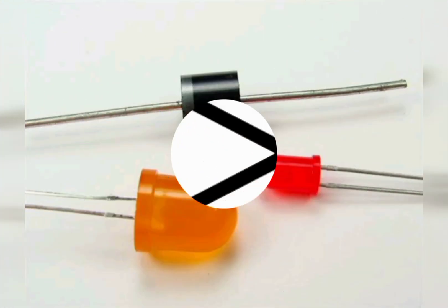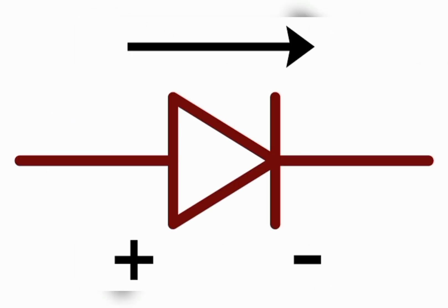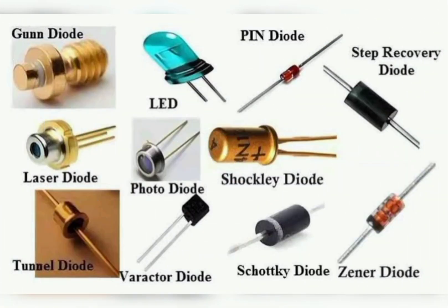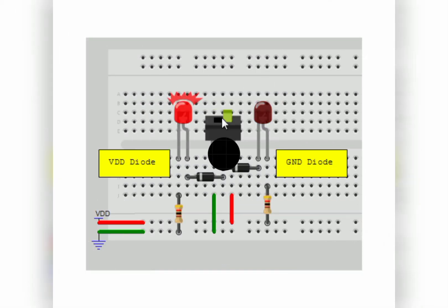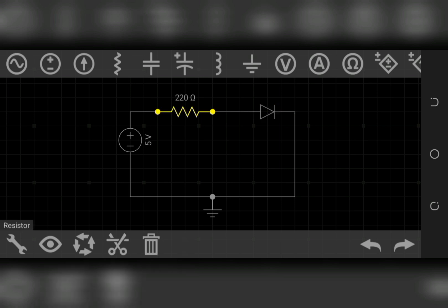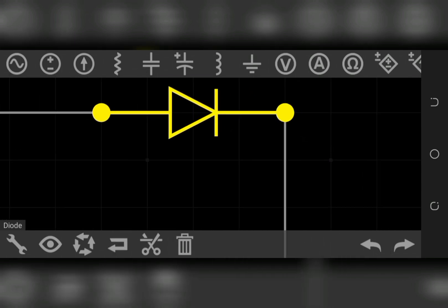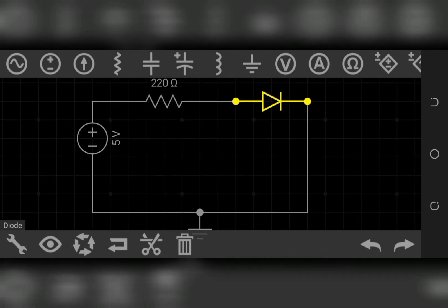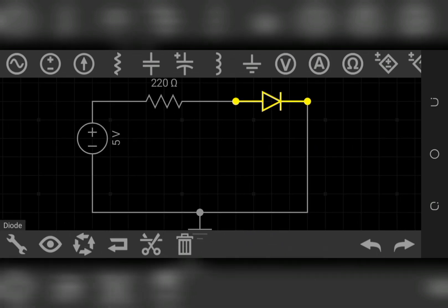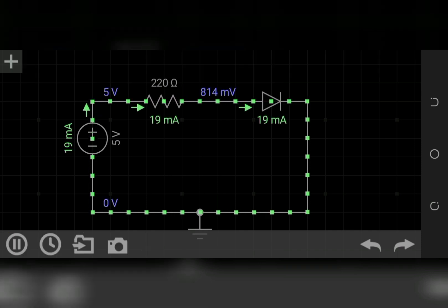Our next basic electronics component is the diode. The diode symbol is an arrow pointing to a line, showing the one-way direction of current flow. These are the various types of diodes and their symbols. Here is a diode circuit where I show that a diode allows current to flow in just one direction.